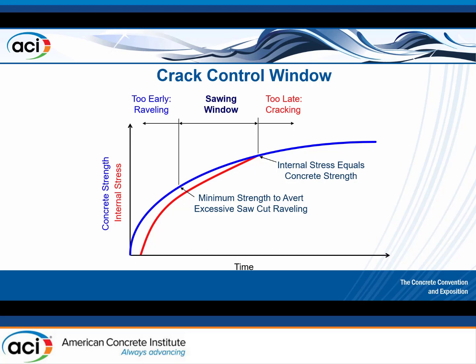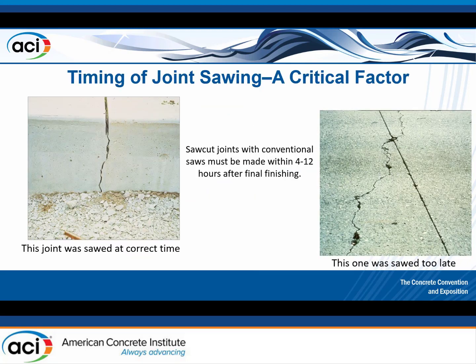There's basically a sweet spot for when to saw-cut your joints. If you get on the pavement too early you have a higher potential for raveling at those joints. If you go too late, stresses have already started to gather at the bottom of the pavement and it's only a matter of time before cracking comes to the surface. For standard saws, ACI specifies cutting within four to twelve hours after final set. For early entry saws, you're looking at around three to four hours.